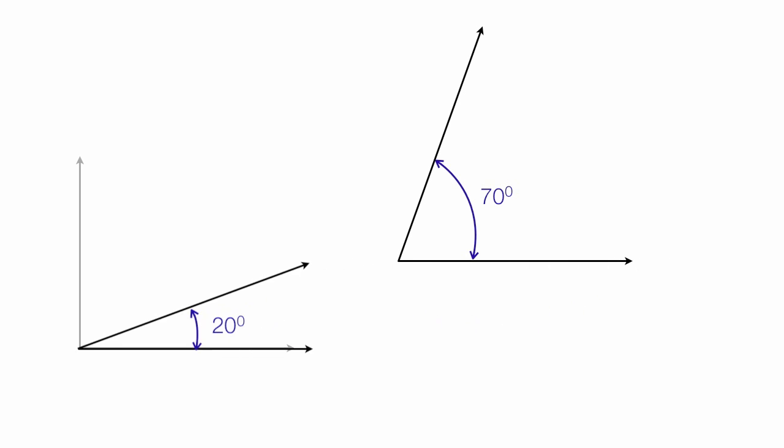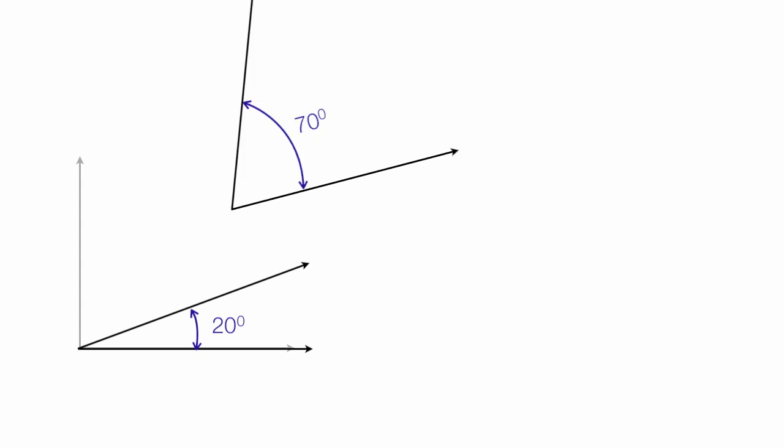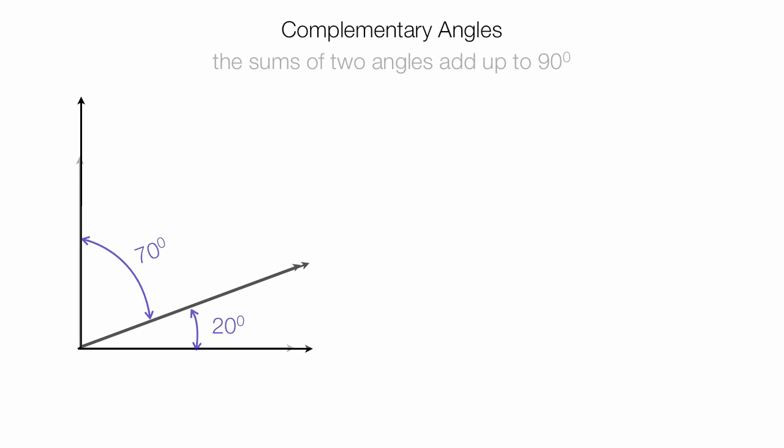Now if I slide the 20 over and I take the 70 and put it right there, you can see how when they're pasted together, they form a 90 degree angle. Again, combined, it's 90 degrees.